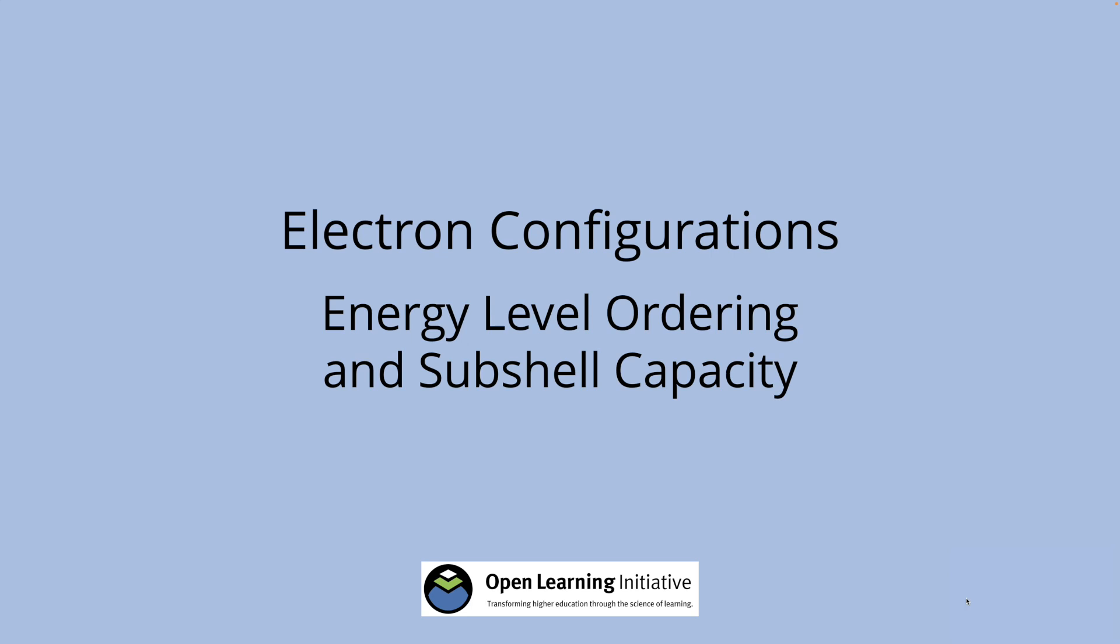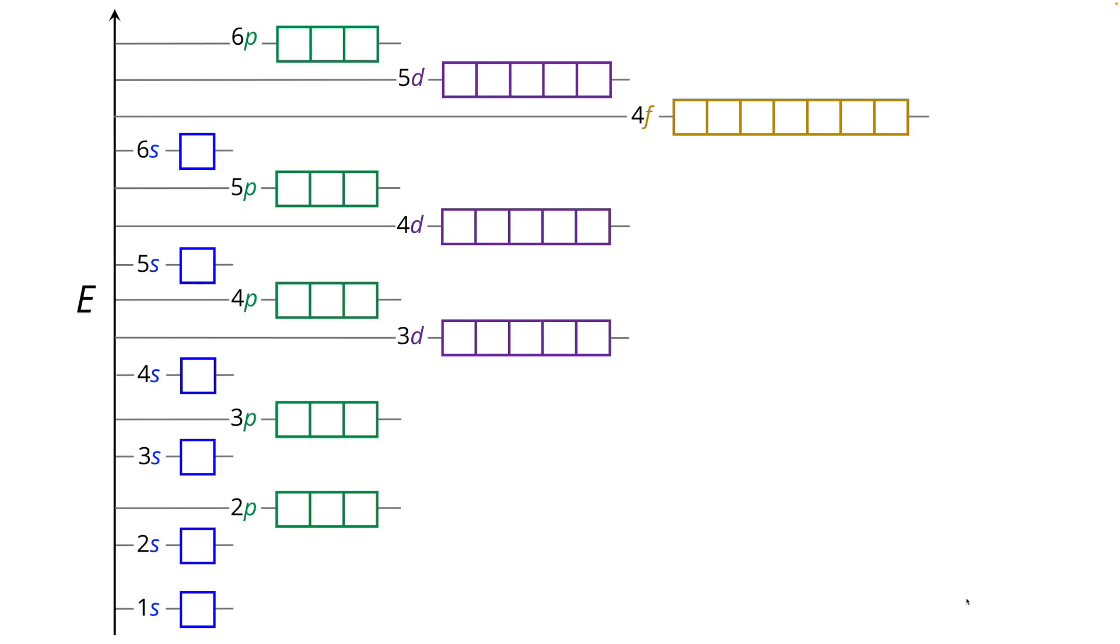Let's take a look at the energy level ordering and subshell capacity for electron configurations. Here's the energy level diagram for multi-electron atoms with the energy going from lowest at the bottom to highest at the top.